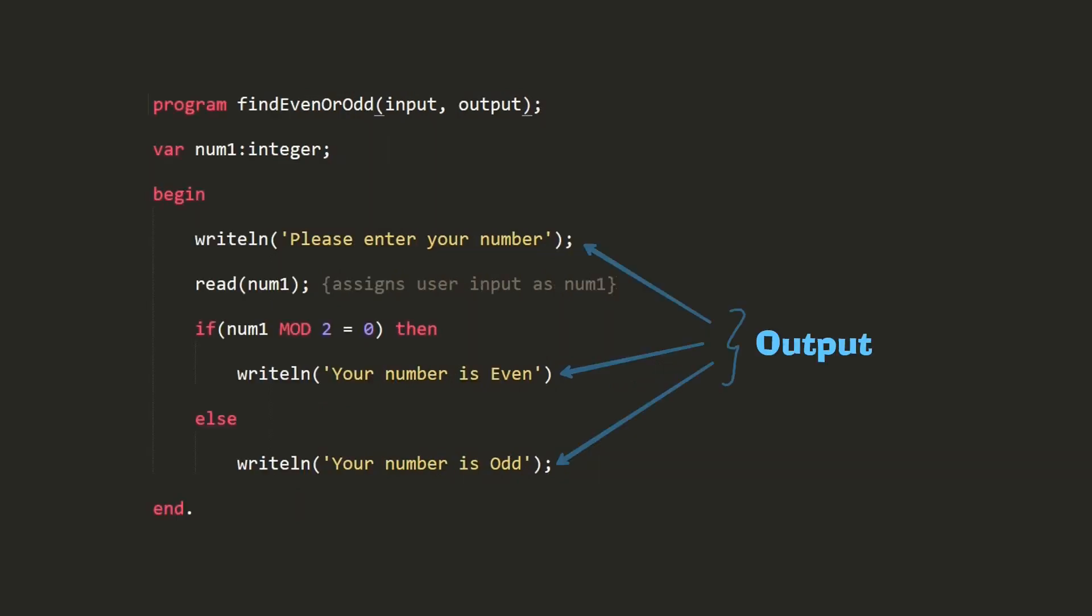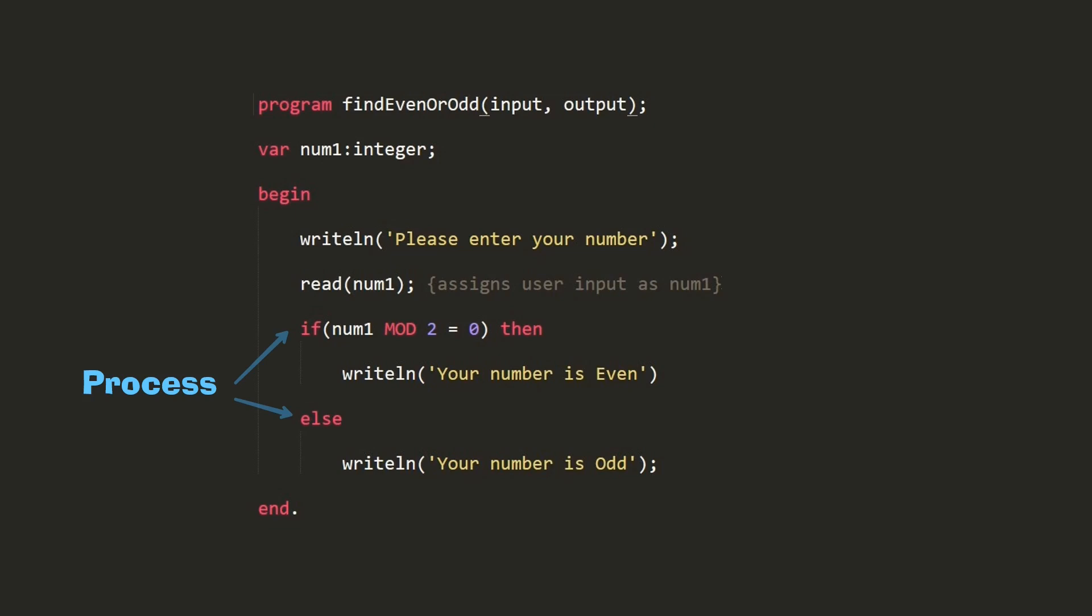Here I am asking the computer whether the number user gave can be divided by two without any remainder or not. If the answer is yes, which means it doesn't have any remainder, then the program will display 'your number is even'. If the answer is no, which means it does have a remainder, then the program will display 'your number is odd'.